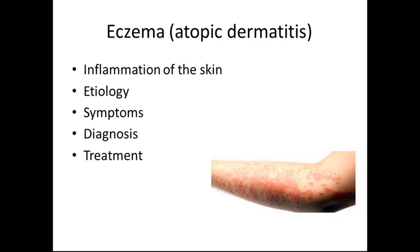Eczema, also called atopic dermatitis, is an inflammation of the skin. The etiology occurs in those with genetic predispositions to allergies and substances or foods that irritate the skin. Symptoms include dry, leathery skin lesions with itching, redness, vesicles, pustules, scales, or a crust. Diagnosis is by observation, and treatment includes topical cortisone creams, antihistamines, sedatives, and avoiding sunlight.